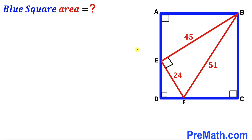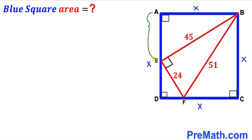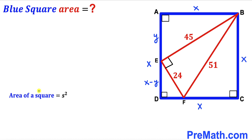Since we are dealing with this blue square, I'm going to label the side of this blue square as x. Then all side lengths of this blue square are going to be x across the board. Furthermore, I'm going to label segment A, E as y. Then the tiny segment E, D has got to be x minus y. Since we are interested in calculating the area of this blue square, let's recall that area equals s², where s is the side length. In our case the side length is x, so the blue square area equals x², and our task is to find the value of x².